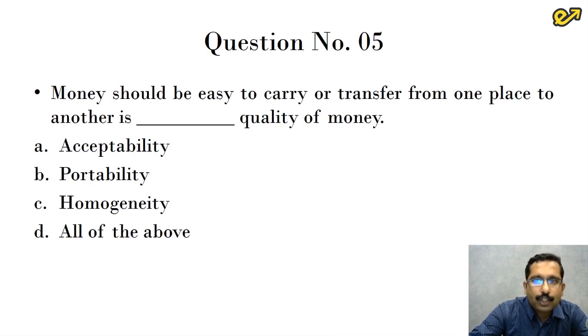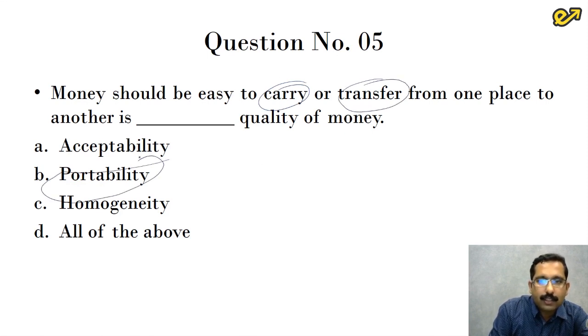Question number five, money should be easy to carry or transfer from one place to another is dash quality of money. Now we know the good qualities of money are acceptability, portability, homogeneity, divisibility, and durability. So here we are talking about carrying the money and transferring the money. So the option for this is option B which is portability.